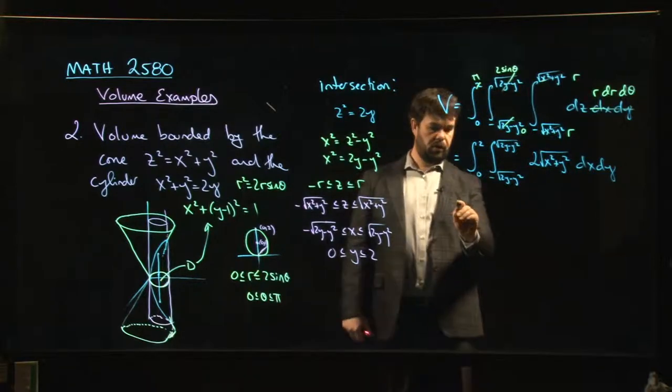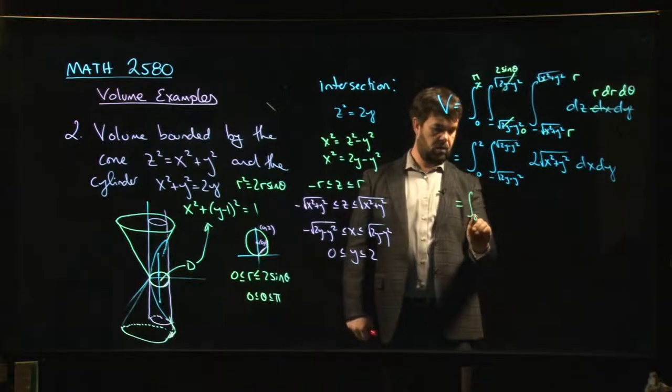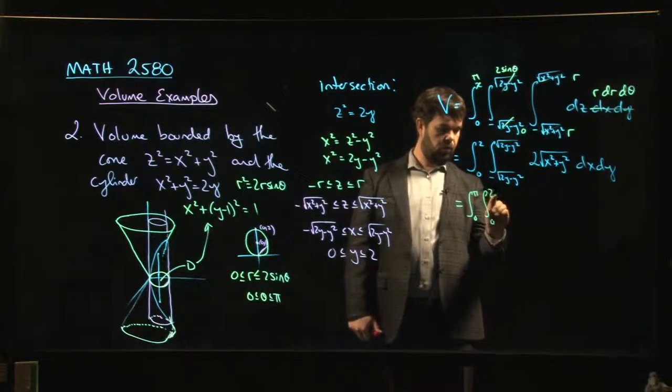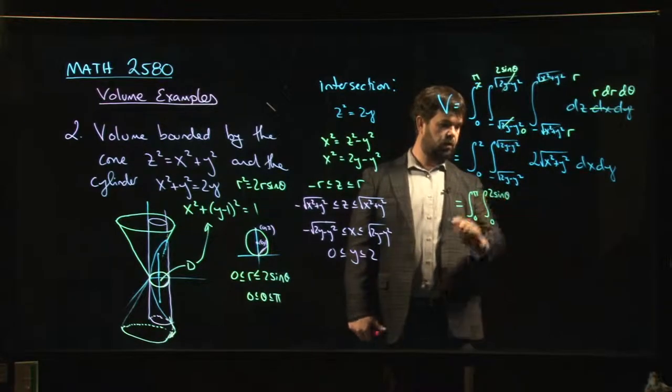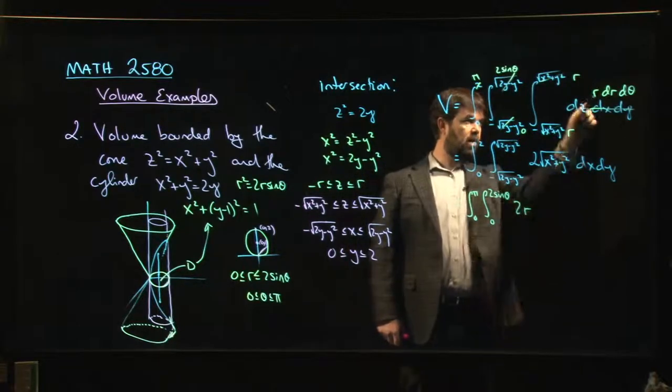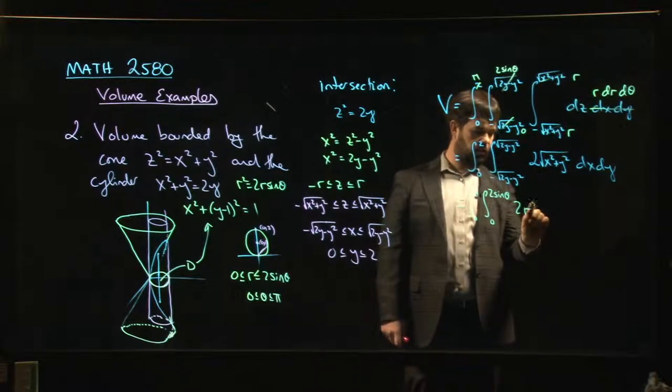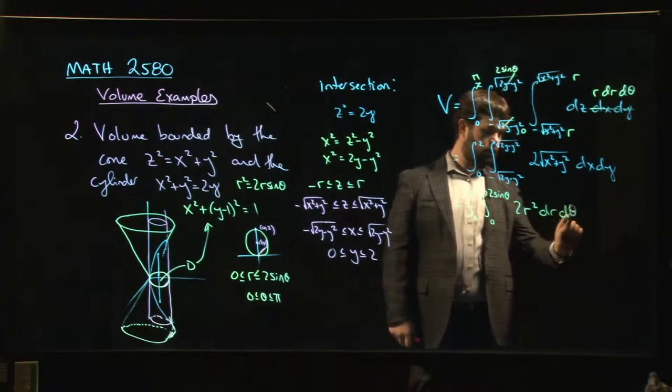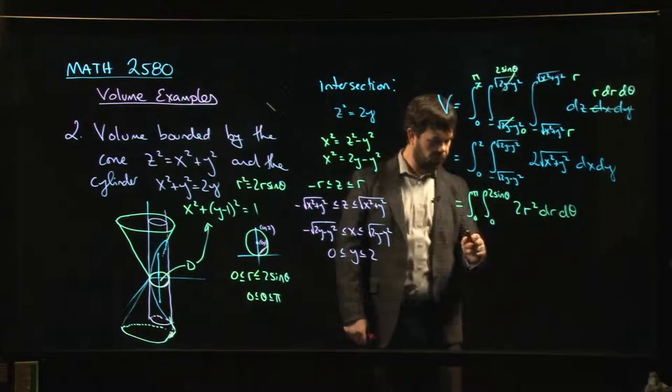So let's write the corresponding polar integral. It's going to look like this. Theta goes from 0 to pi. R goes from 0 to 2 sine theta. And we have 2r, r coming from here. Then we have another r. So we actually have 2r squared dr d theta.